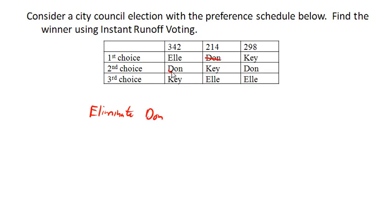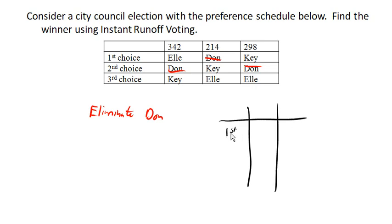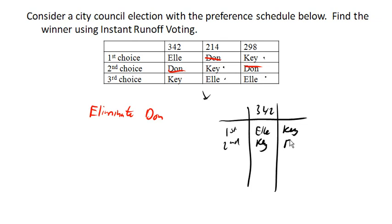We're going to eliminate Don from the election, and that's basically going to reduce our table down to two groups: these people prefer L over Key, and there are 342 of them. Then these people both prefer Key over L, and that's going to be 512 people — and this is a majority now.